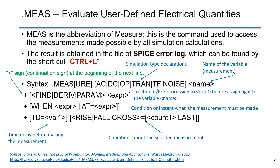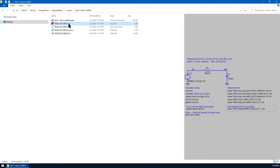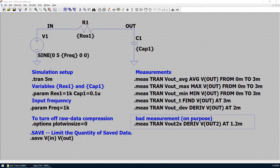Please go to the listed reference for detailed information. Now let's go to LTSpice to run a simulation with measurements. Let's go to the folder for this lecture and open the schematic in LTSpice. Here is the first-order low-pass filter that we have studied in previous lectures. All parameters are the same: R1 remains at 1 kilo ohm and C1 remains at 0.1 microfarad.